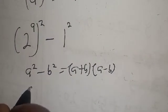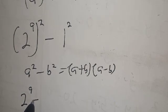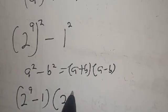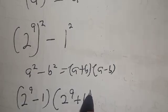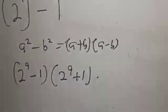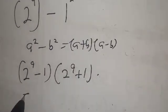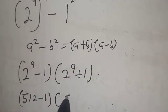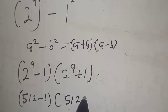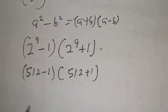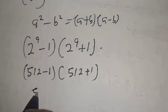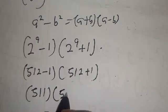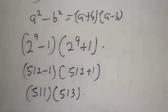Applying the formula, we get: 2 raised to power 9 minus 1, multiplied by 2 raised to power 9 plus 1. Now 2 raised to power 9 is 512. So this becomes 512 minus 1, which is 511, multiplied by 512 plus 1, which is 513.